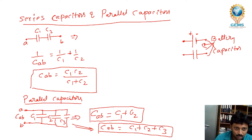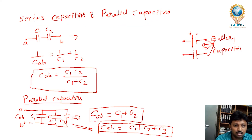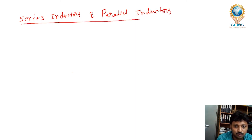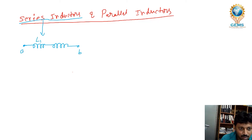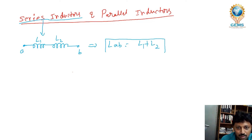Next we look at inductors. First we find series inductors. Two inductors L1 and L2 are connected in series between A and B. The total inductance LAB is equal to, just like resistance, L1 plus L2.